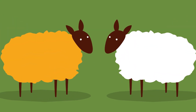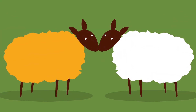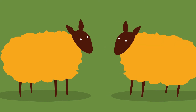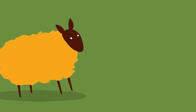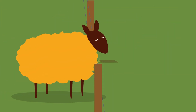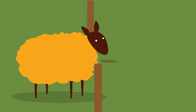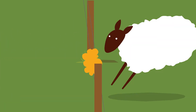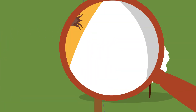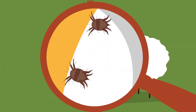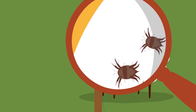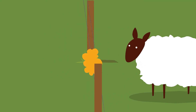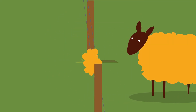It's worth remembering that as well as transferring directly from sheep to sheep, sheep scab mites can live off-host for 16 to 19 days, meaning that fences, loose wool, sheds, transport, etc. can all be sources of infection.